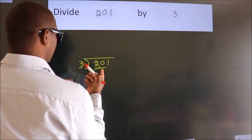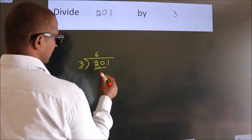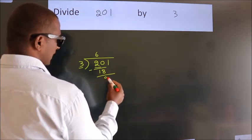A number close to 20 in 3 table is 3, 6, 18. Now we should subtract. We get 2.